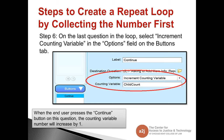Step six: on the last question of the loop, you have to select 'increment counting variable' from the buttons tab options. The options will say normal, set counting variable to one, or increment counting variable — you select increment counting variable. This tells A to J Author that this is the end of the loop. You always put your counting variable in for questions within the loop. When the end user presses the continue button each time they go through the loop, A to J Author adds one to the counting variable.